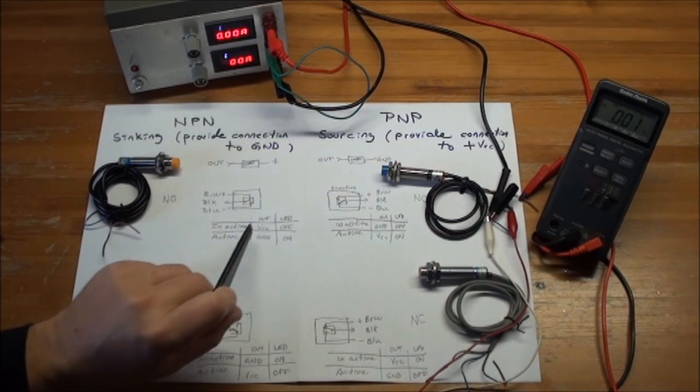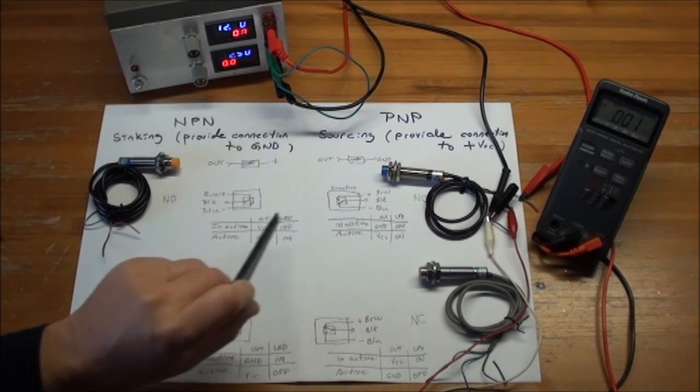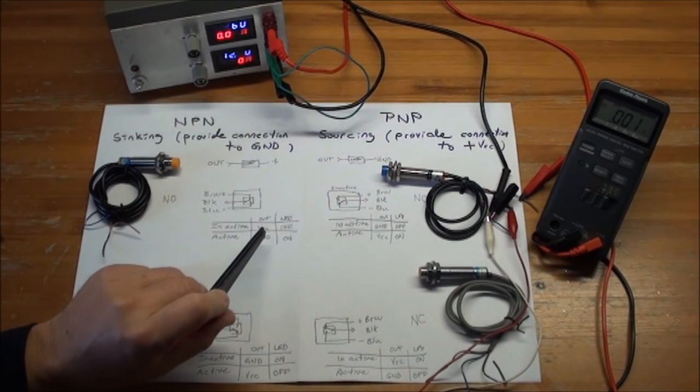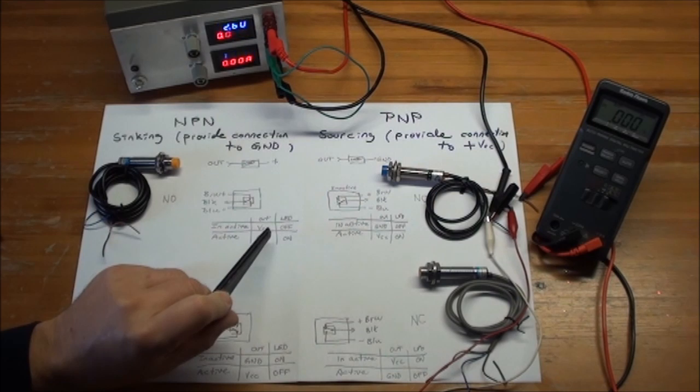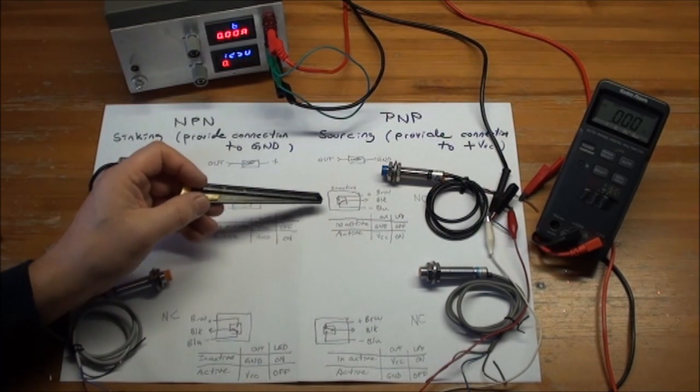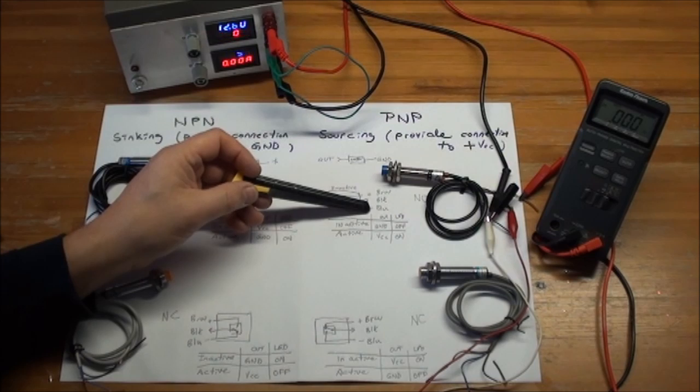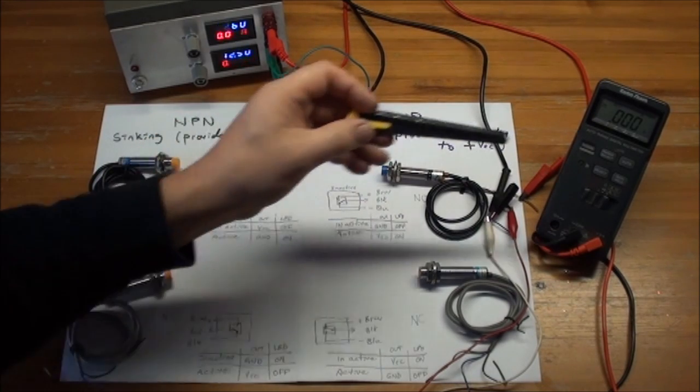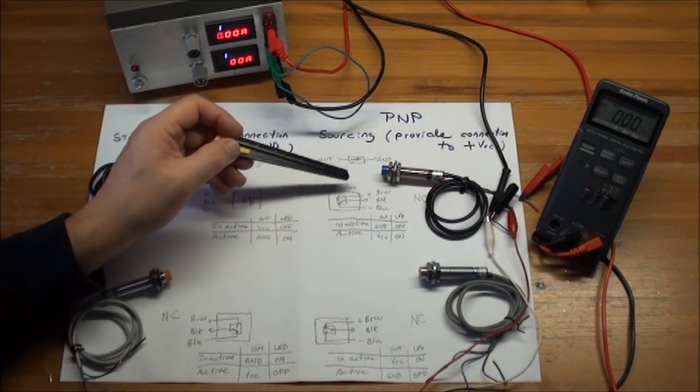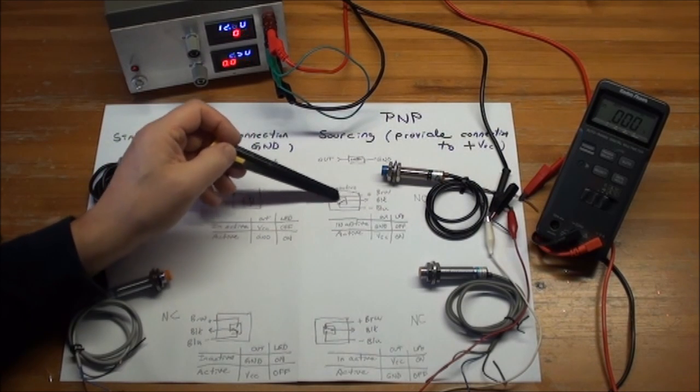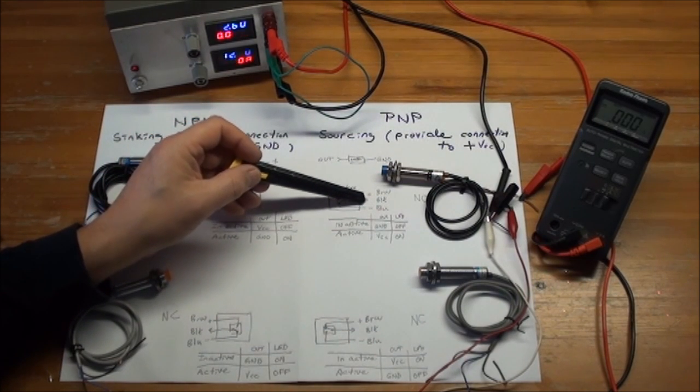So it's totally a mirror image of what you have seen with the NPN normally open. And the diagram is also like a mirror image. Again, in the inactive state, you have a connection between the blue and the black, which is why you get ground out now, and activated then you will get the power supply out.